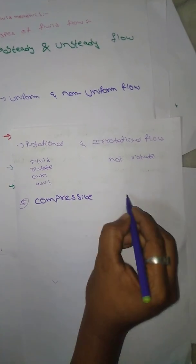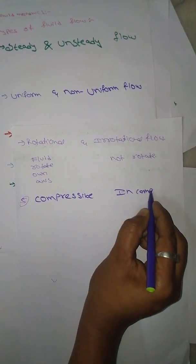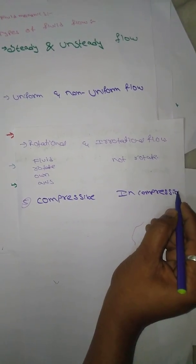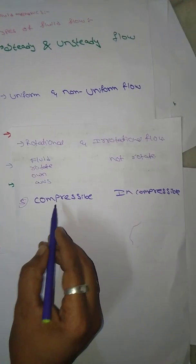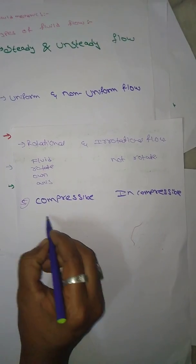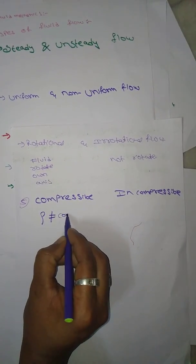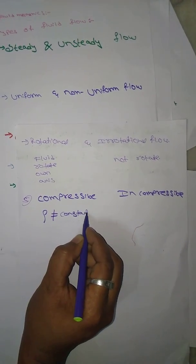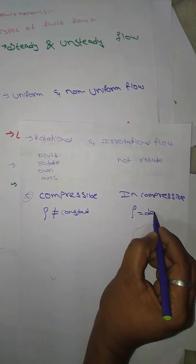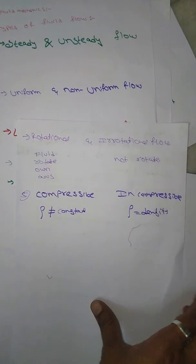Compressible and incompressible. For compressible flow, density is not constant. Here, density remains constant. So these are the types of fluid flows.